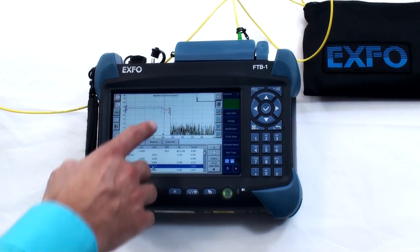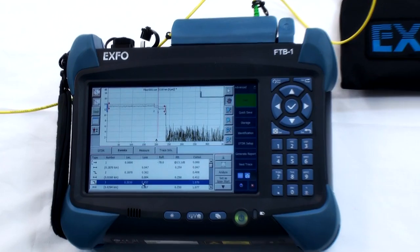However, I'm not able to measure the loss of the splitter in this case, so I will need to increase the pulse width to 50 ns to take an accurate measurement.